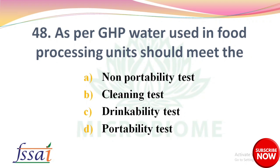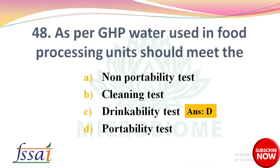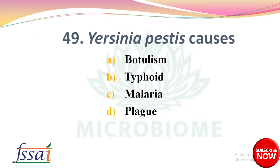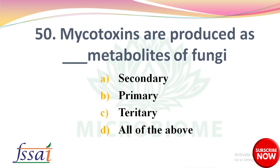As per GHP, water used in food processing units should meet the — options: non-portability test, clearing test, trinkability test, portability test. The right answer is option D, portability test. Next: Yersinia pestis causes — options: botulism, typhoid, malaria, plague. The right answer is option D, plague.